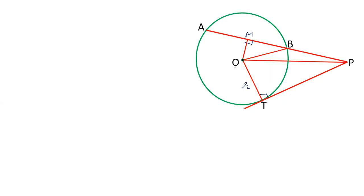Join OB also, OP also. And now let us see how we can prove that PA into PB is equals to PT squared.